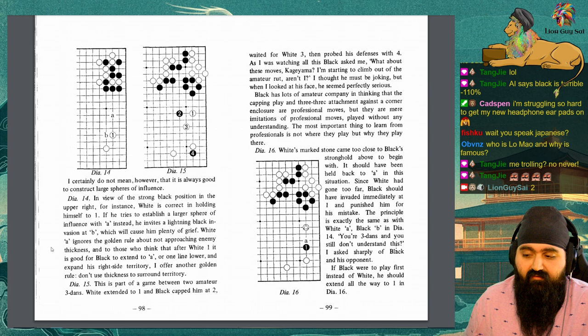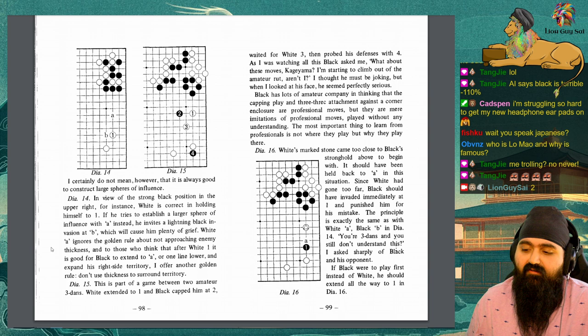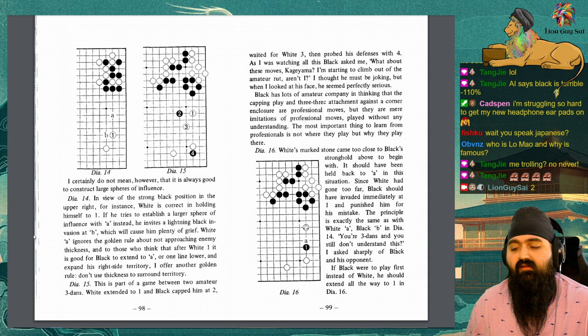And to those who think that after white 1 it is good for black to extend to A, or one line lower, and expand his right side territory, I offer another golden rule. Don't use thickness to surround territory.